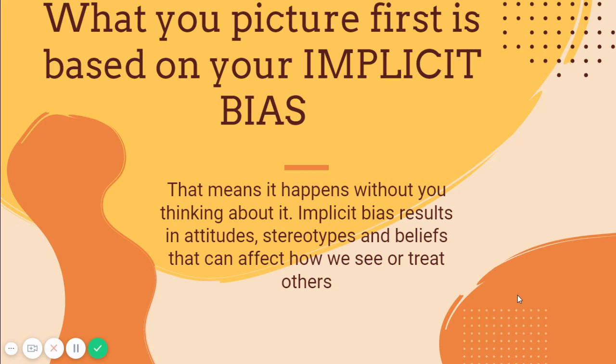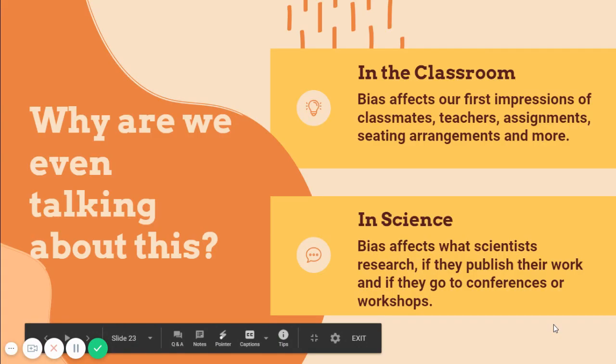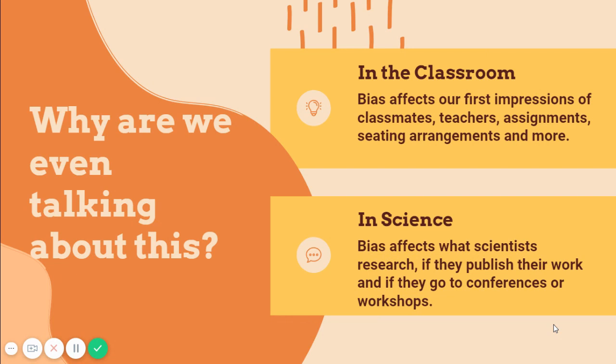Implicit bias results in our attitudes and stereotypes and beliefs that can affect how we see or treat others. So why are we even talking about this? In the classroom, our bias affects our first impressions of classmates, teachers, assignments, seating arrangements, and more. In science, bias affects what scientists research, if they publish their work, and if they choose to go to conferences or workshops.